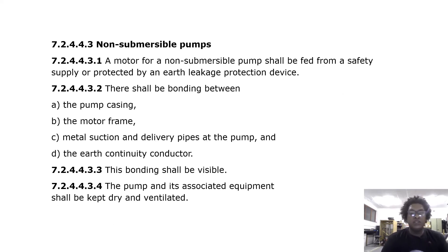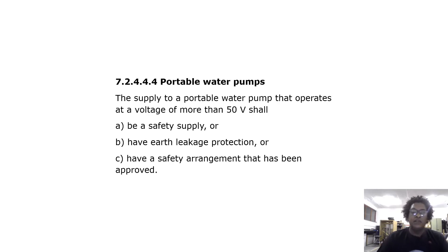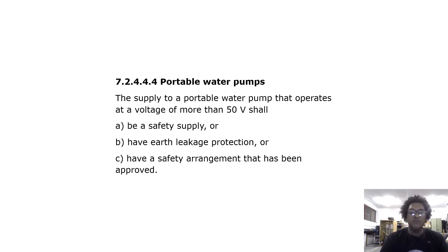A motor for a non-submersible pump shall be fed from a supply protected by an earth leakage protection device. There shall be bonding between the pump casing, the motor frame, metal suction and delivery pipes at the pump, and the earth continuity conductor; this bonding shall be visible. The pump and its associated equipment shall be kept dry and ventilated. The supply to a portable water pump operating at a voltage of more than 50 volts shall be a safety supply, or have earth leakage protection, or have a safety arrangement that has been approved.